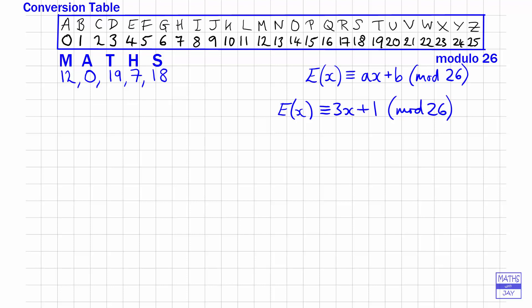That means our word becomes - I've got to multiply each number by 3 and add 1. The letter M was 12, so 3 times 12 plus 1 is 36 plus 1, which is 37. We're in mod 26, so we take 26 away from 37, giving us 11.